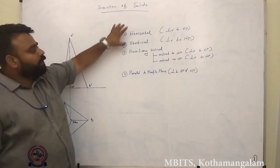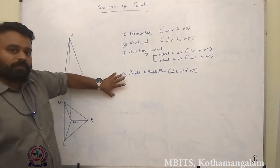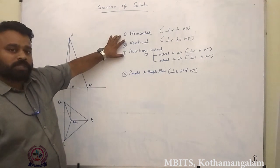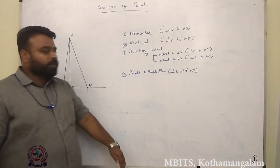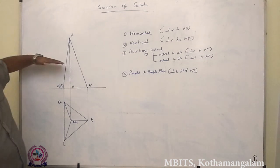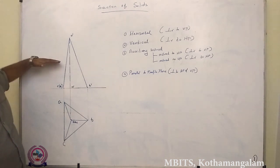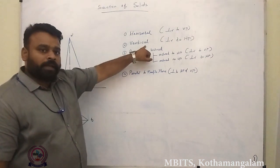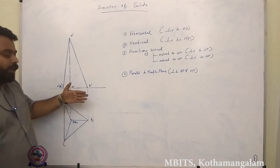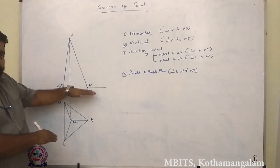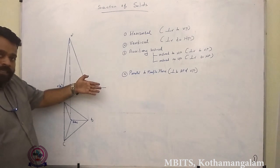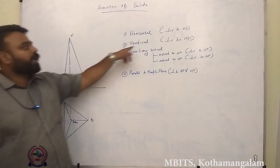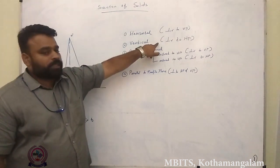In section of solids we will be dealing with four types of sectional planes. The first type is a horizontal section plane — the section plane will be parallel to the horizontal plane. The second type is a vertical section plane — a section plane which is perpendicular to the horizontal plane is known as a vertical sectional plane.